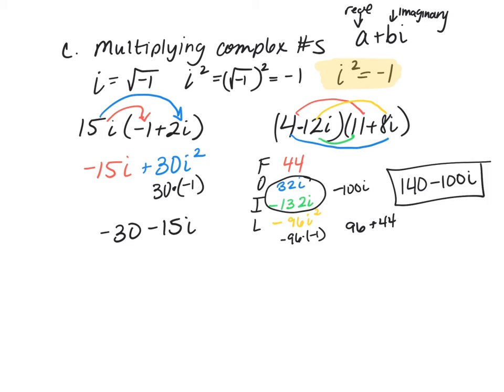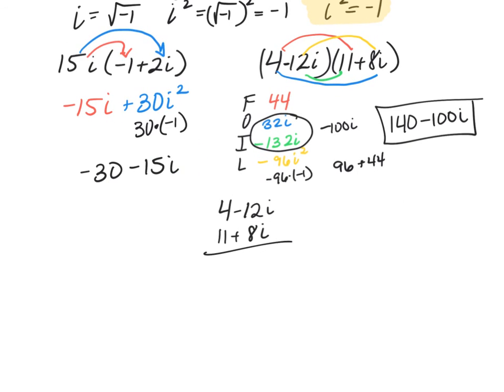So FOIL is one method. And then you can also use the vertical multiplication that I like as well. Going to give you the same answer. We're going to do 8i times negative 12i. 8i times negative 12i gave us negative 96i squared. We're going to do 8i times 4 gives me 32i.